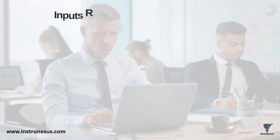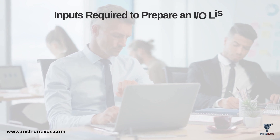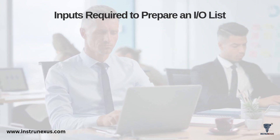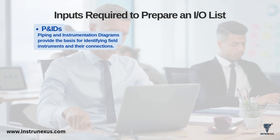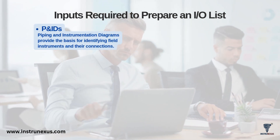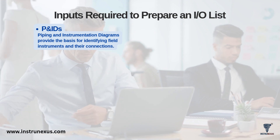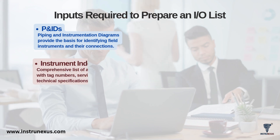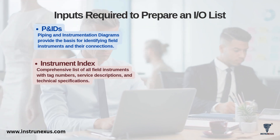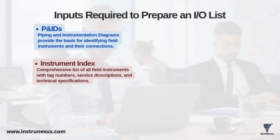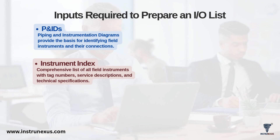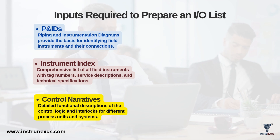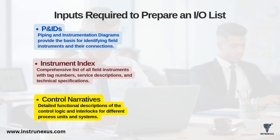A high-quality IO List is only as good as the information you put into it. There are several key input documents required. First, the P&IDs – piping and instrumentation diagrams – which are the maps that provide the basis for identifying every field instrument and its connections. Second, the Instrument Index: a comprehensive list of all instruments providing their tag numbers, service descriptions, and technical specifications. Third, control narratives, which describe how the process is supposed to be controlled, detailing the functional logic and interlocks.